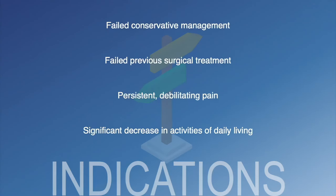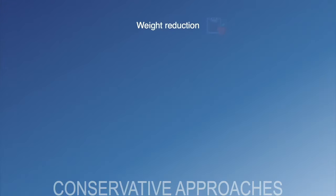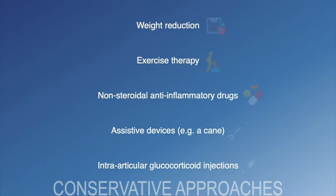Total hip arthroplasty is indicated for patients who have failed conservative or previous surgical treatment options for a deteriorated hip joint and who continue to have persistent debilitating pain and a significant decrease in their activities of daily living. Total hip arthroplasty is typically an elective procedure, and a conservative approach aimed at treating the underlying condition should be tried first. For patients with osteoarthritis, this usually includes non-operative treatment measures such as weight reduction, physical therapy, non-steroidal anti-inflammatory drugs, assistive devices such as a cane, and intra-articular glucocorticoid injections.